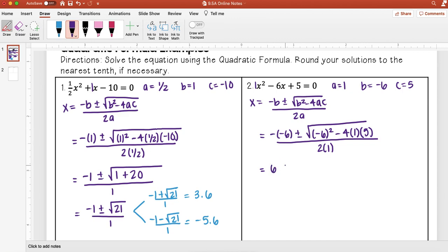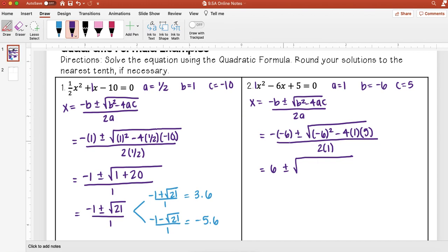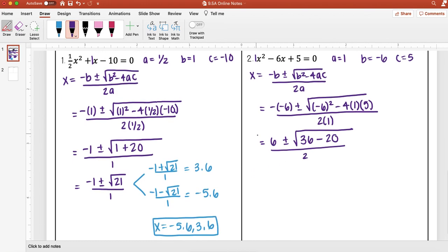Negative 6 squared, if you don't know what that is you can go ahead and use Desmos for that as well. So make sure you put parentheses around it and you see that's 36 minus 4 times 1 is 4 times 5 is 20 all over 2 times 1 which is 2. 36 minus 20 I get 16 over 2, and then now at this point I like to go ahead and break it apart.